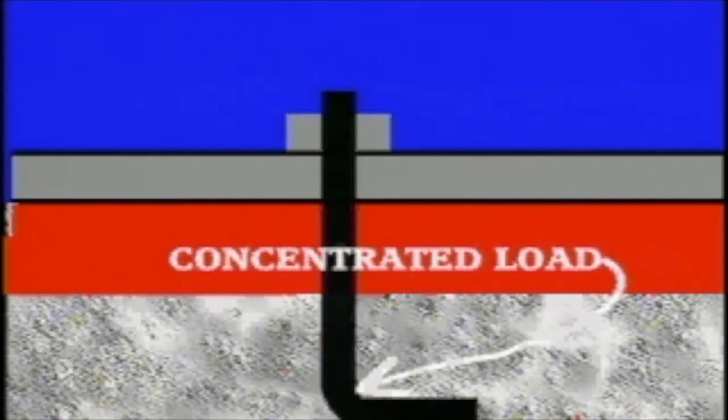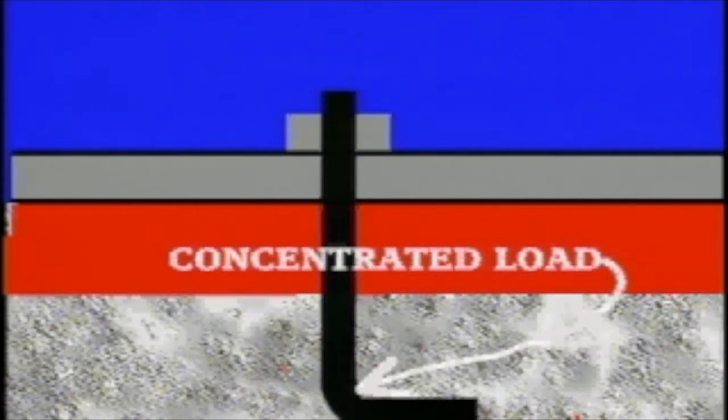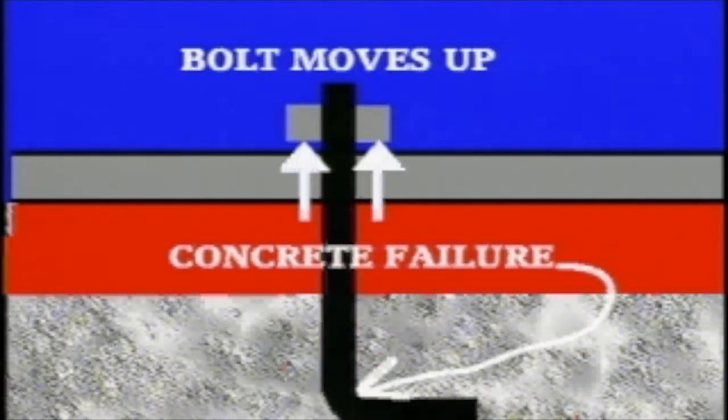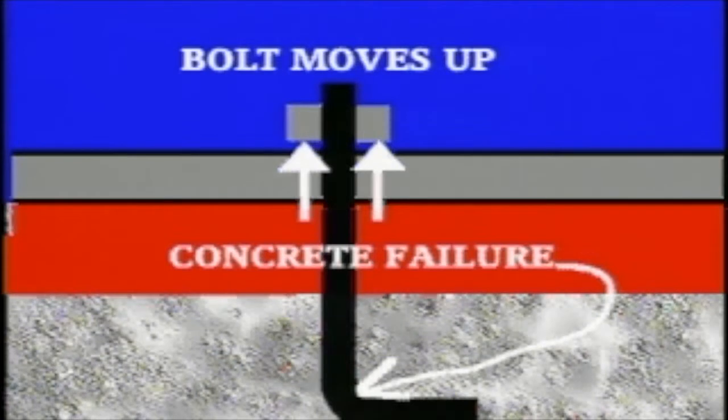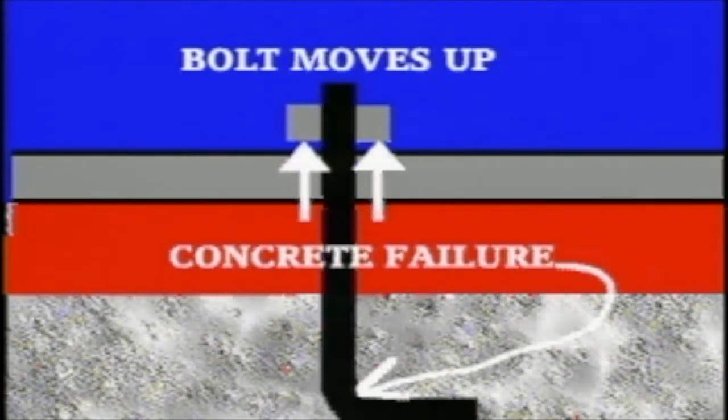Concrete is strongest in compression, but there is a concentrated bearing load at the top of the J as shown. Over time, this concentrated load can cause a failure of the concrete, thereby allowing the bolt to move upward, which loosens its clamping force.